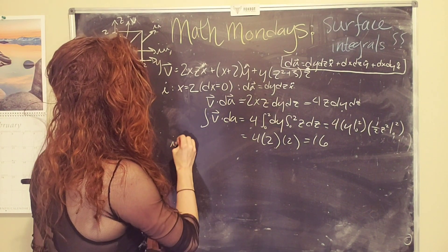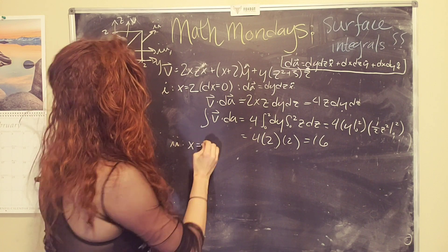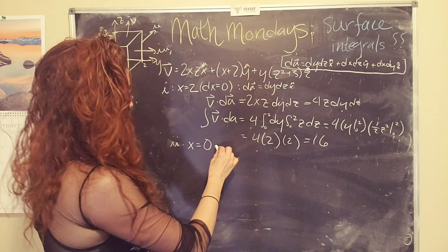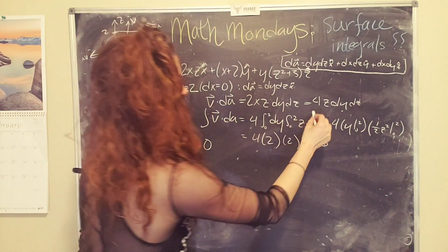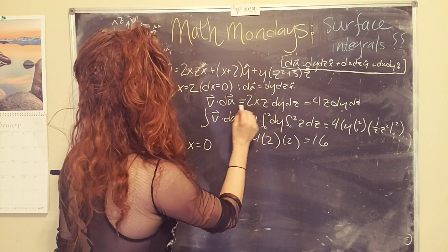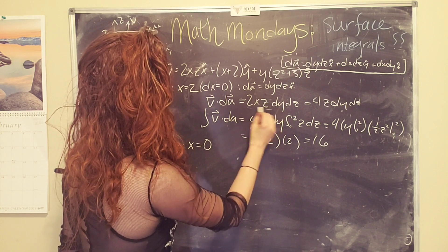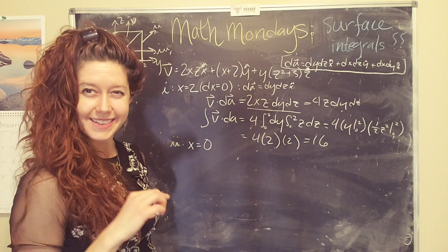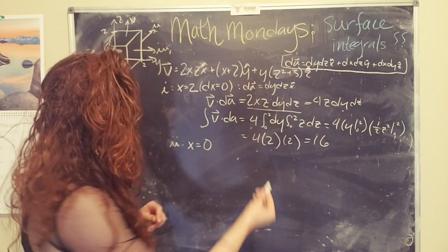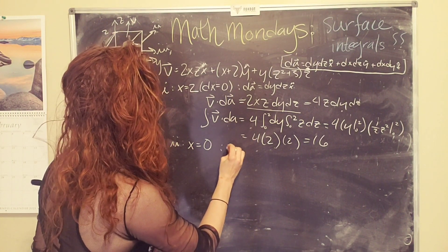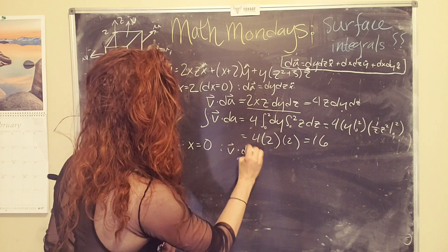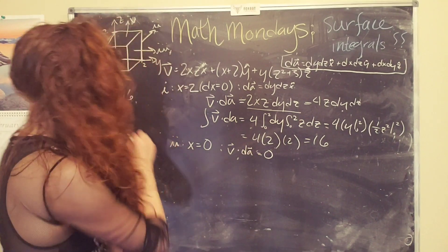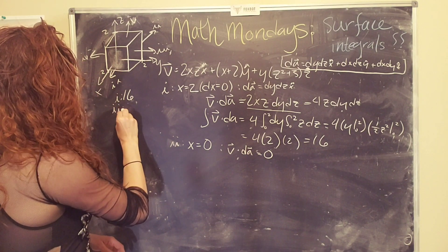Second surface, cruising right along on this, on this plane, this is the back of the box, x equals zero. And so we did the hard work here. So we're like, wait a second. V dot dA is 2xz times dy dz. Oh, wait a second. X is zero. Oh, look at that. So then in this case, v dot dRailroad is zero. And so the integral goes to zero. Oh, I like that. That was easy. Okay.